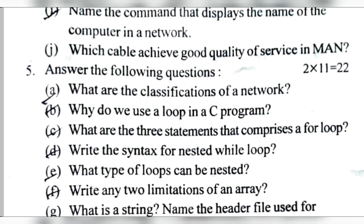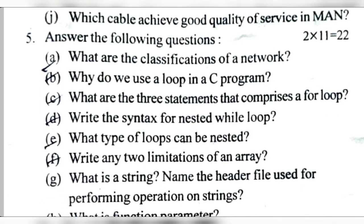Number 2 — What are the classifications of a computer network? Depending on connectivity, computer networks are divided into two groups: wired and wireless. Depending on the size of the network, computer networks are divided into different categories: PAN, LAN, MAN, and WAN.